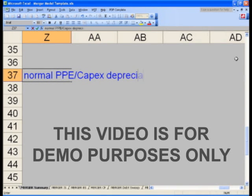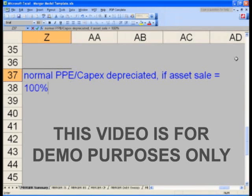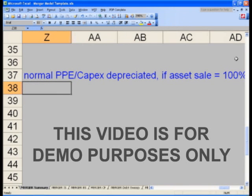And these normal stuff are depreciated. If this is a true asset sale, you'll set this equal to 100%, because effectively, you're stepping up 100% of that.